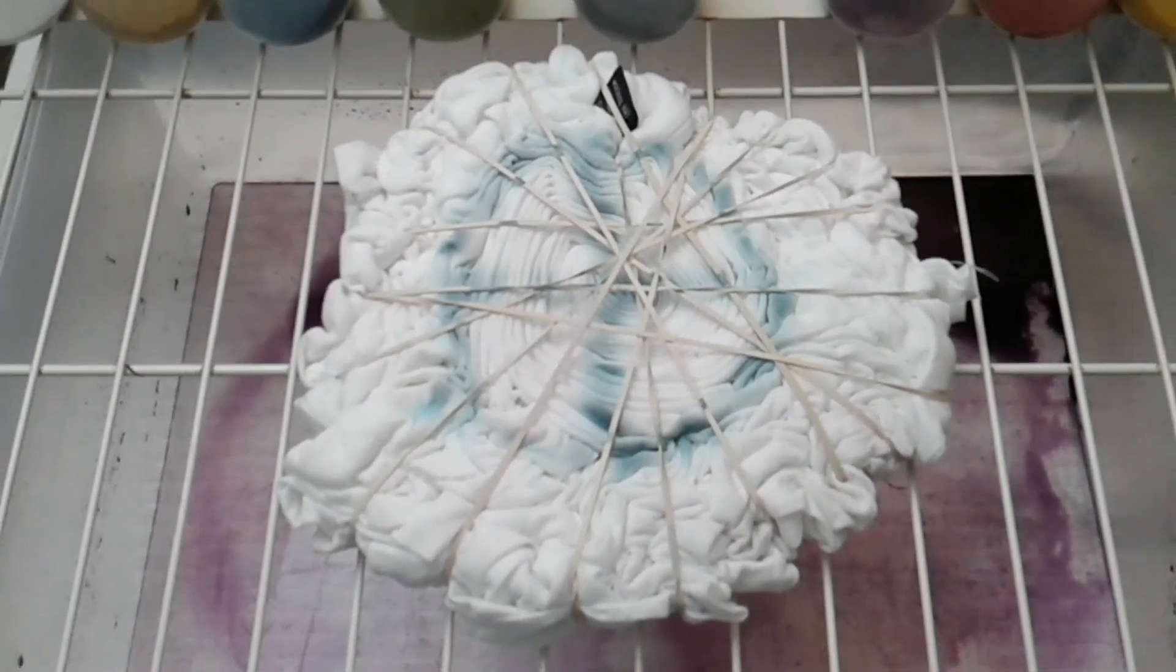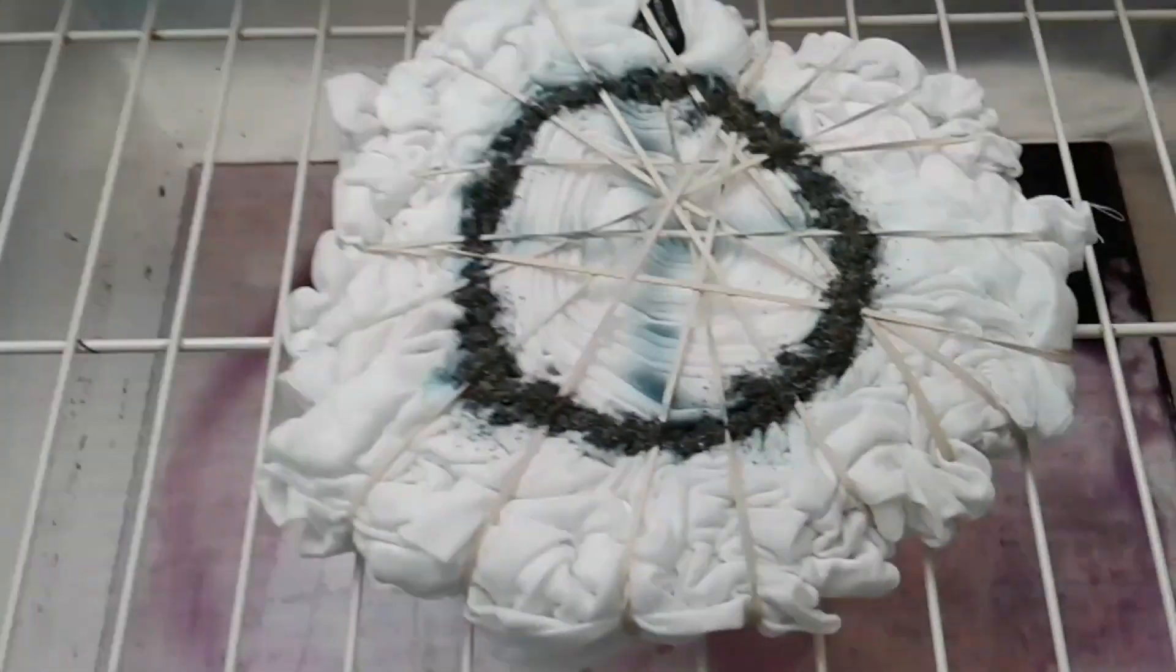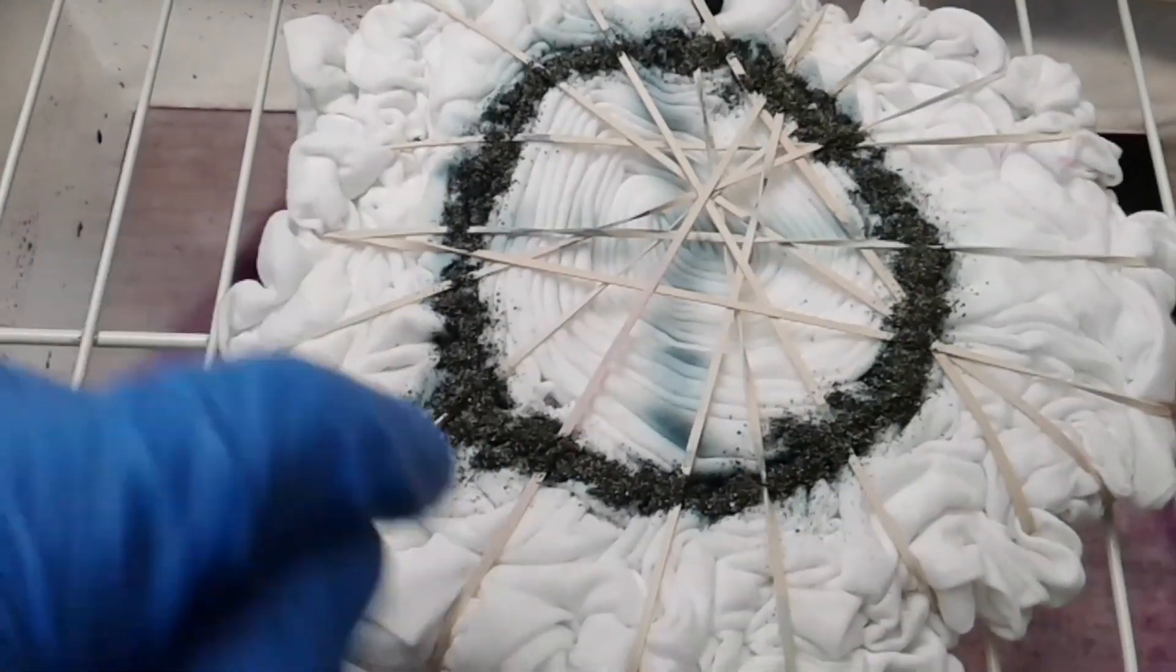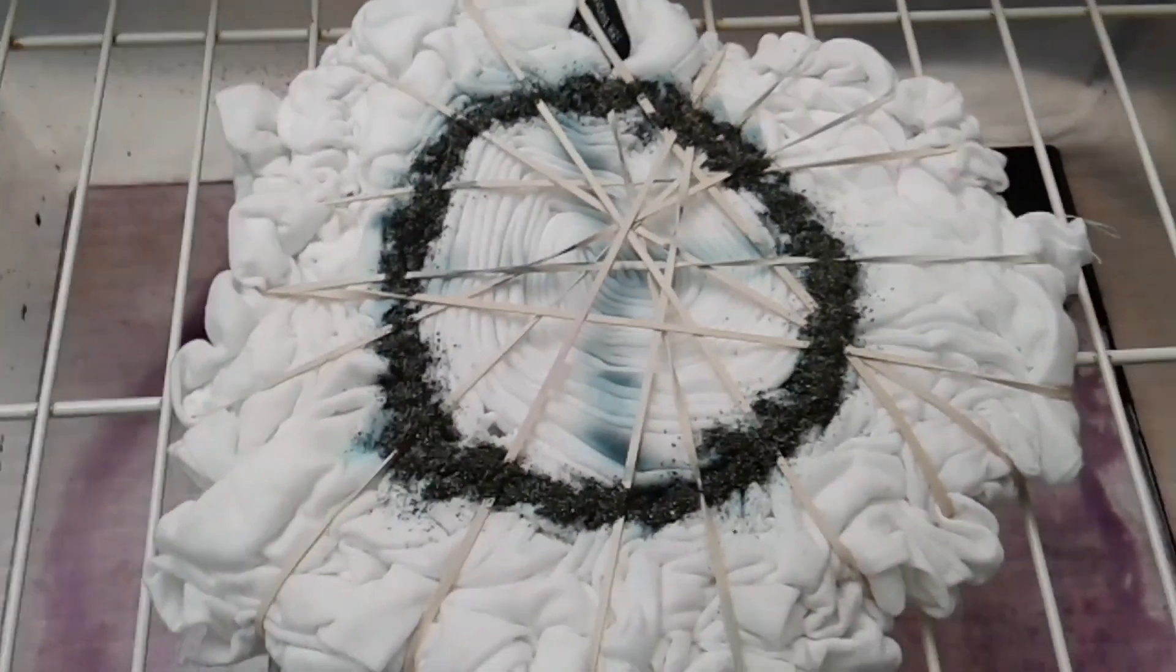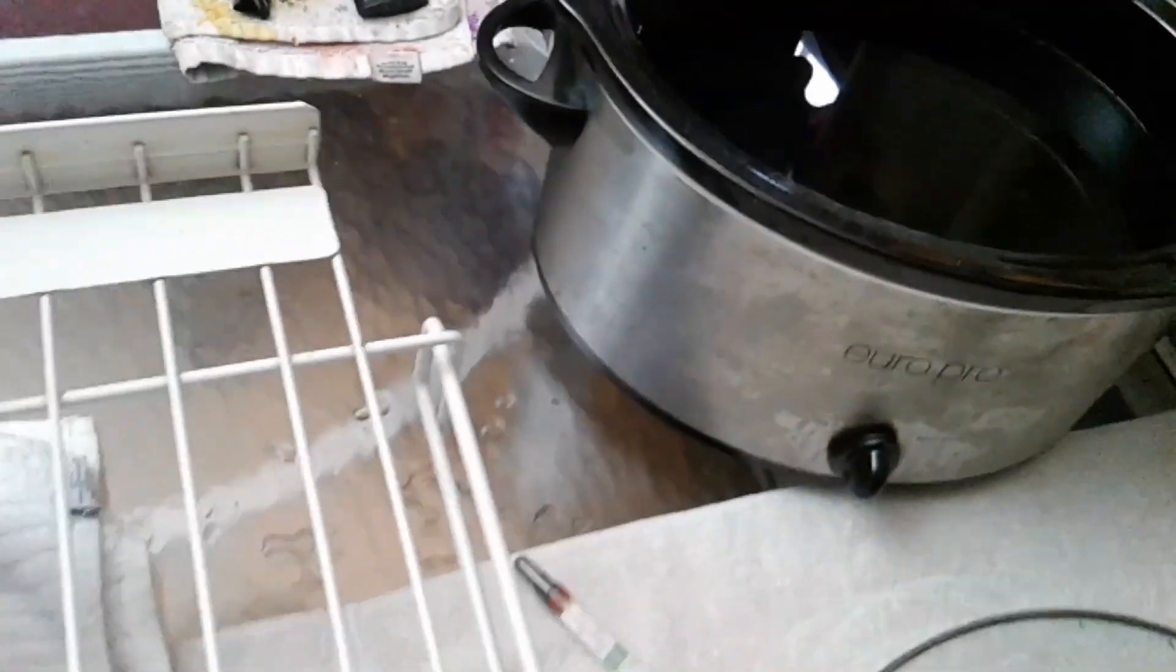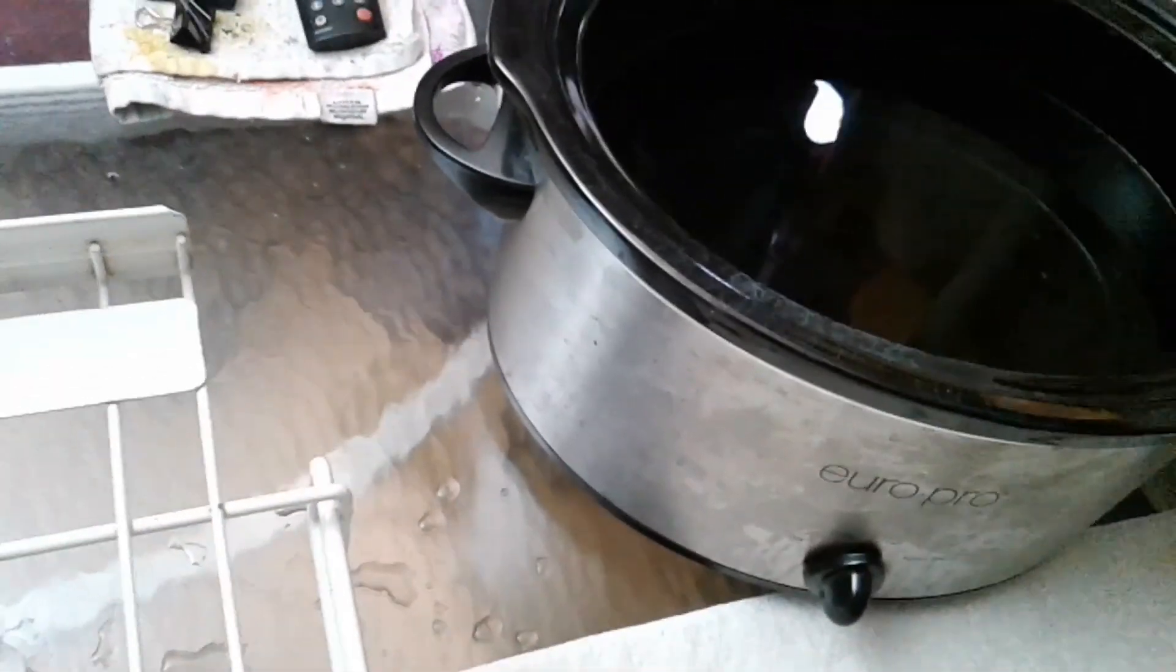Color by color. So here we have our dark teal blue laid out in our circle. The first thing we're going to do is we have our crock pot over here with our water already above 150 degrees.